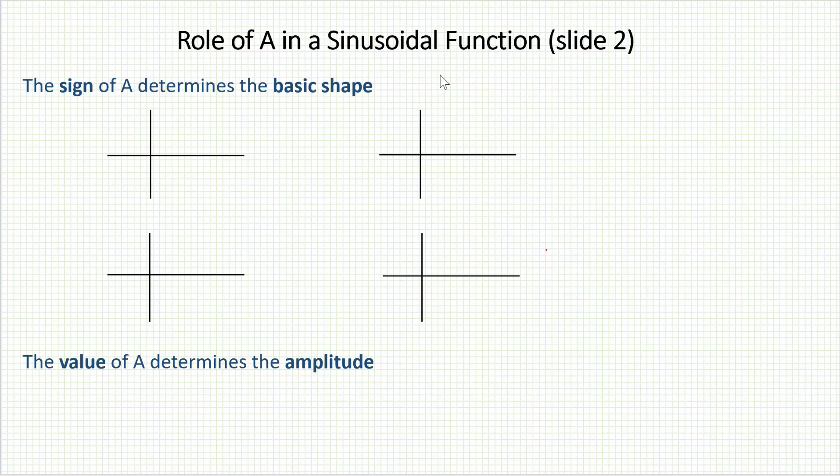If a is positive, then there is no reflection across the x-axis, and so we'll either have our regular sine function or our regular cosine function.